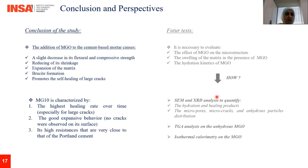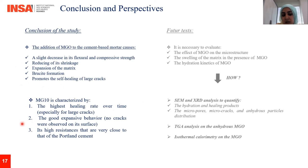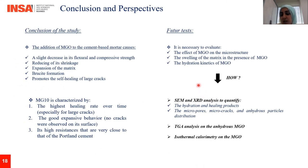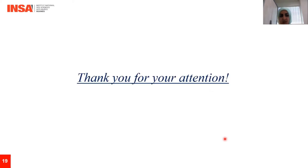As a conclusion, the addition of MgO to the cement-based mortar caused a slight decrease in strength. However, it significantly reduces shrinkage, and in some cases produces expansion due to brucite formation. It also promotes the self-healing of large cracks. In particular, MG10 is characterized by the highest healing rate over time. It shows good expansive behavior because no cracks were observed on its surface, and its mechanical resistance is very close to that of Portland cement. However, these hypotheses need to be confirmed with further experimental tests, especially to understand the effect of MgO on the microstructure — including micropores and microcracks — as well as the swelling mechanism of MgO and its hydration kinetics. Thank you so much for listening.